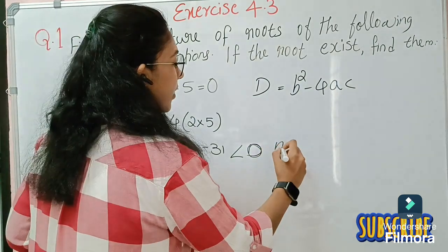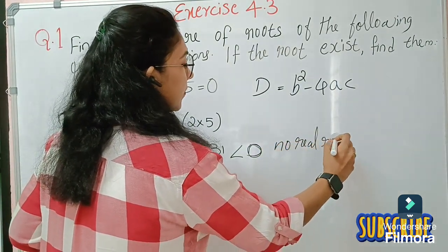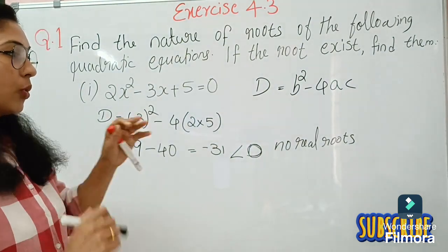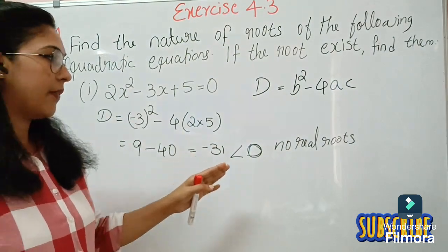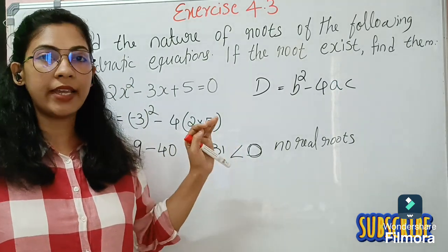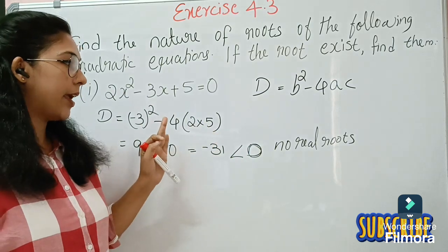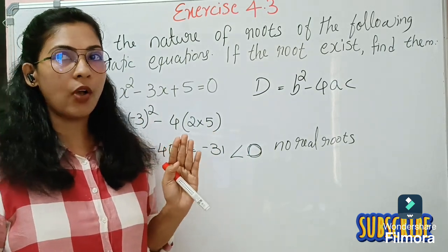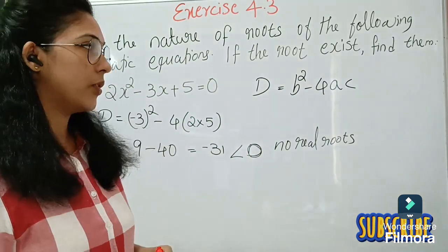It is clear that D = −31 is less than 0, which means there are no real roots. If the value of D is less than 0, we conclude there are no real roots. So for this case there are no real roots.